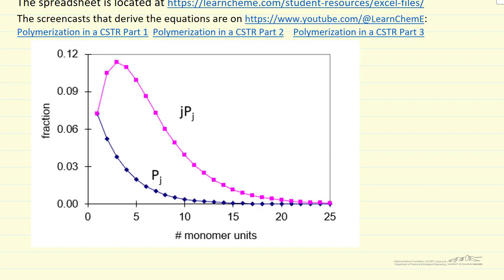The spreadsheet generates this plot of fraction versus number of monomer units. This is also concentration, since we have an inlet concentration of one.